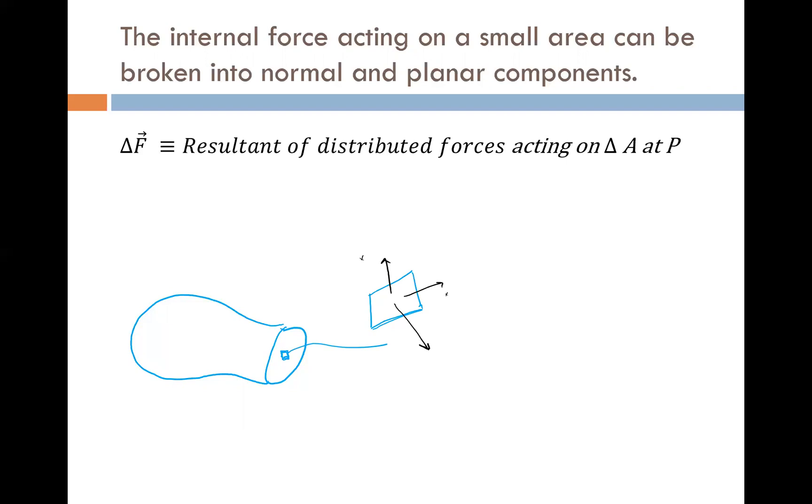Give it some coordinate directions where these two are in the direction of the plane—those are tangential to the plane—and this one here is normal. So if we look at that little delta A, it has a force acting in some direction, some resultant force.